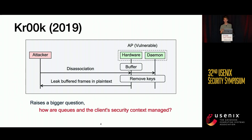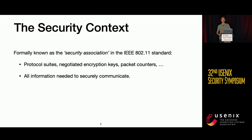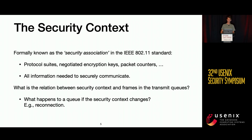This CROQ attack raised a bigger question for us: how are all these queues managed across the entire stack — not just the hardware queue but also the one in the kernel? And how does the client security context come into play? The security context, often referred to as a security association, includes everything needed for secure communication: encryption protocols, encryption keys, packet counters, and so on.